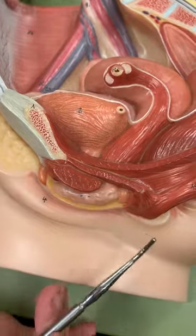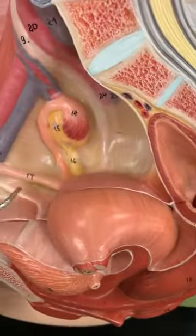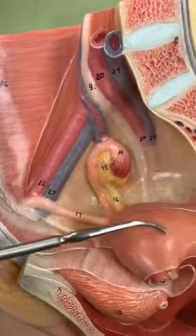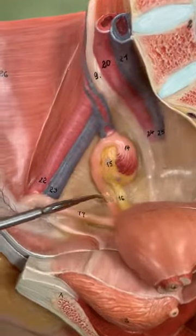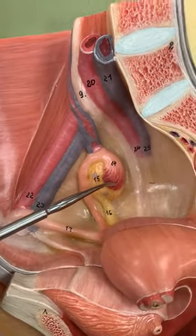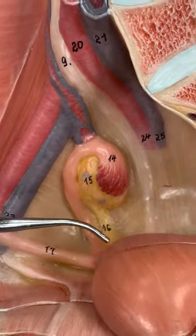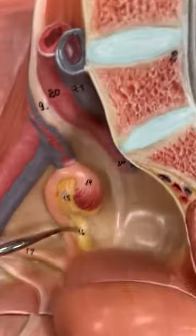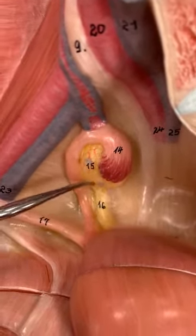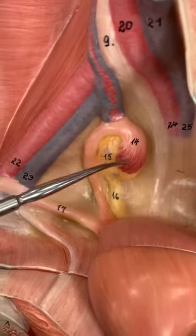When you look at the top, the uterus is going to be anchored by the round ligament, so it travels anteriorly. Coming off of the uterus you have your fallopian tube and then the fimbriae — the finger-like projections that sit on top of the ovary. Connecting the ovary to the uterus is the ovarian ligament, which goes from the ovary to the uterus.